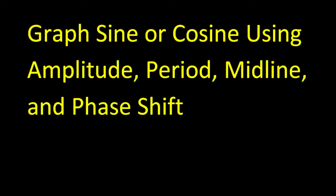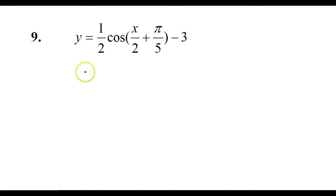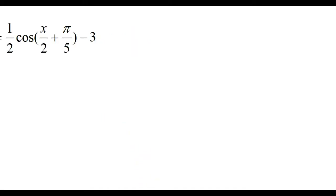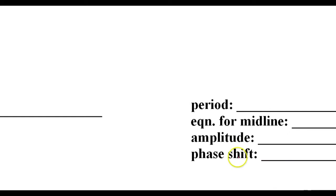In this video, we will continue learning how to graph sine or cosine using amplitude, period, midline, and phase shift. Let's take a look at problem number nine. We need to know the period, the midline, the amplitude, and the phase shift.